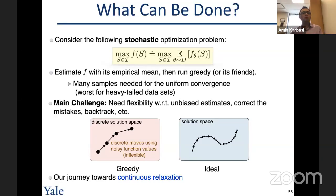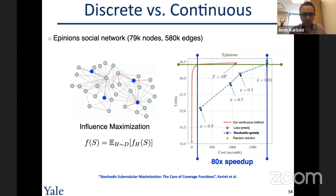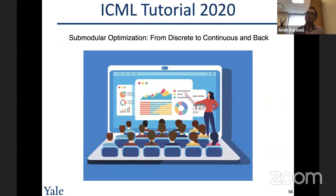Another approach is to move from the discrete domain to the continuous domain where steps are smaller and corrections possible. An experiment by Karimi et al. on influence maximization shows the continuous solution (red line) achieves a huge speedup over the best discrete solution (blue line). For those interested, an ICML tutorial in approximately two months will cover how to approach discrete submodular optimization through continuous relaxations, with fast algorithms and strong theoretical guarantees.